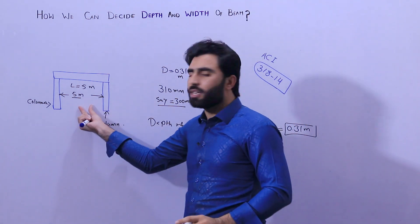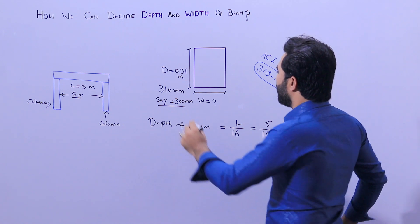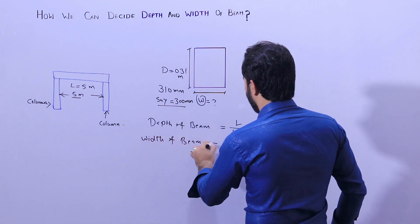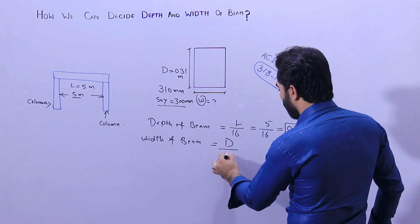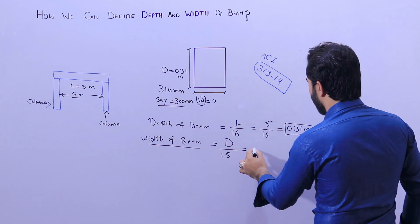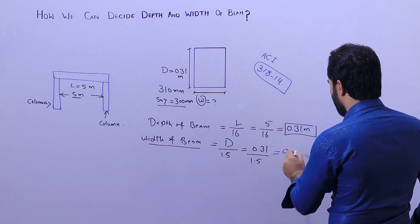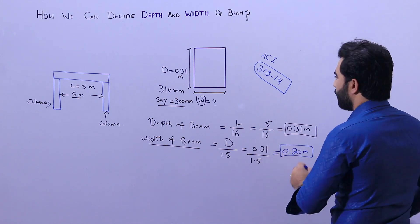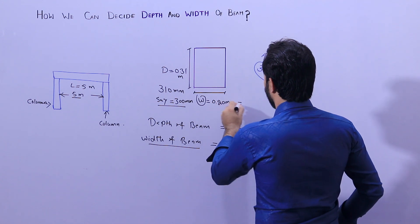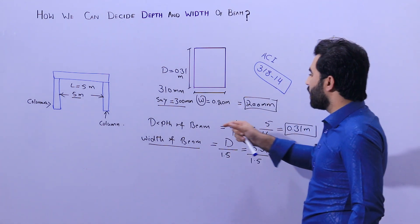By this formula you can find the depth of the beam for any span — for example, if the length is 6 meters, divide 6 by 16 to get the required depth. The next one is width. Let me write here: width of beam = depth d divided by 1.5, where d is the depth of the beam. Putting in the value: 0.31 meters divided by 1.5 gives 0.20 meters. So the width of the beam is 0.20 meters, or 200 millimeters.